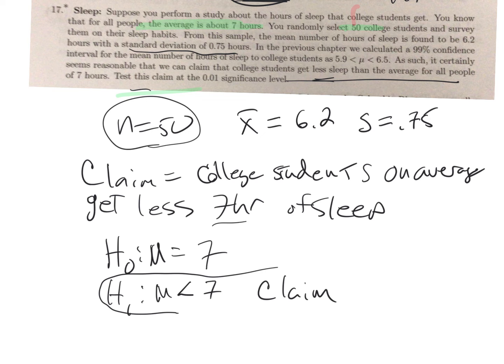Now we're going to find the test statistic. To do this by hand, we know x-bar is 6.2, the mu we're wondering about is seven, the sample standard deviation is 0.75, and n equals 50.